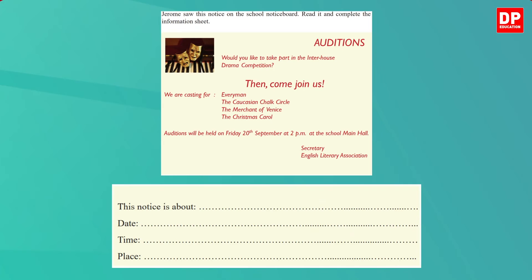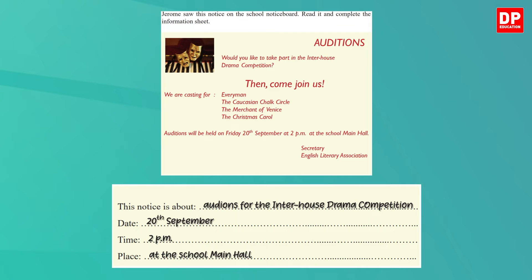Now let's fill in the blanks of the activity at the bottom of page 64. This notice is about auditions for the inter-house drama competition. Date: 20th September. Time: 2 p.m. Place: the school main hall. That was quite simple! Remember, notices are short and full of information, so if you get a fill-in-the-blanks activity like this, it shouldn't be too difficult to pull out the information.